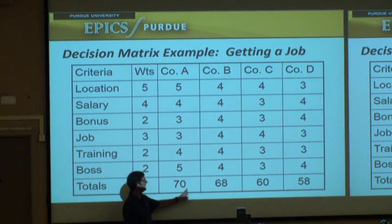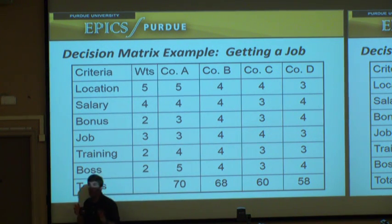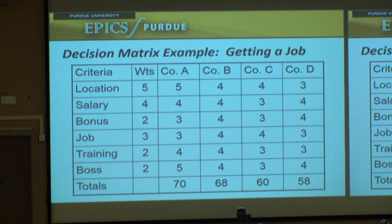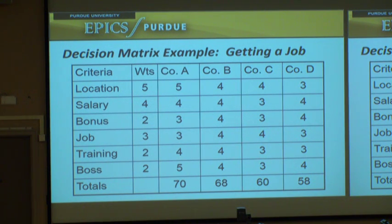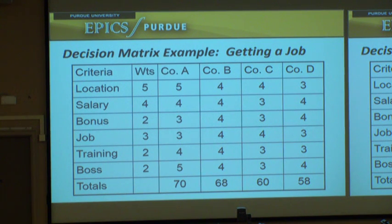Now when you do this, is it statistically significant? No, because I'm using judgment calls on whether something is a three or a four. But if I've got something that scores 70 and something that scores 20, the 70 is better. During design, always use your brain — use your common sense, take a step back and say, does this make sense? You might say, we thought this one was going to be better — why isn't it? This is a great thing to put up in your design reviews to show your decision process and how you made the decisions.